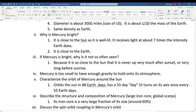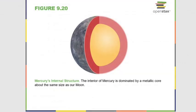Mercury orbits the Sun in 88 days and rotates on its axis in about 58 Earth days, so its day is roughly 55–58 Earth days. Mercury has a very large iron core — about 60% of its size — even larger proportionally than Earth's, whose core is about half its radius. It also has global scarps. Here's a picture of Mercury's core showing how large it is relative to the planet.